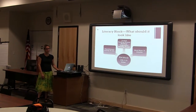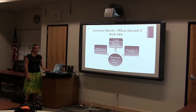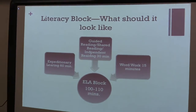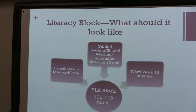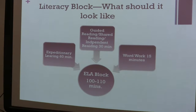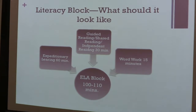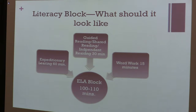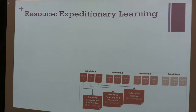When you're doing a literacy block, you need to give yourself about 100 to 110 minutes. Expeditionary Learning lessons are supposed to be 60 minutes. Outside of that, you're supposed to have 30 minutes of guided reading, shared reading, and independent reading, and then 15 minutes of word work. It comes to about 105 minutes, so you have a little wiggle room.